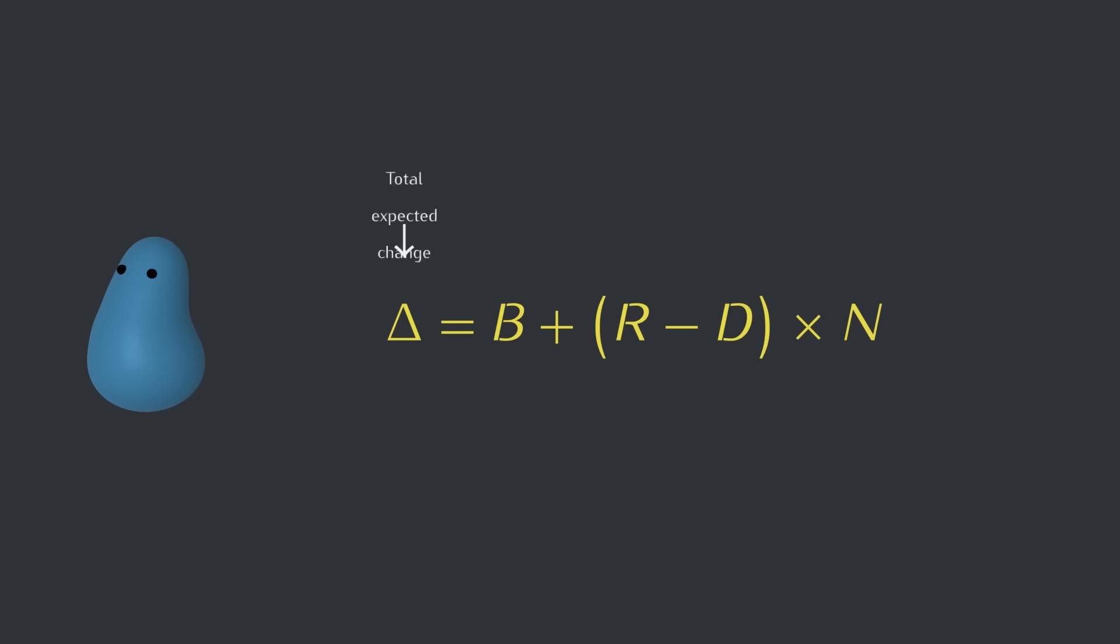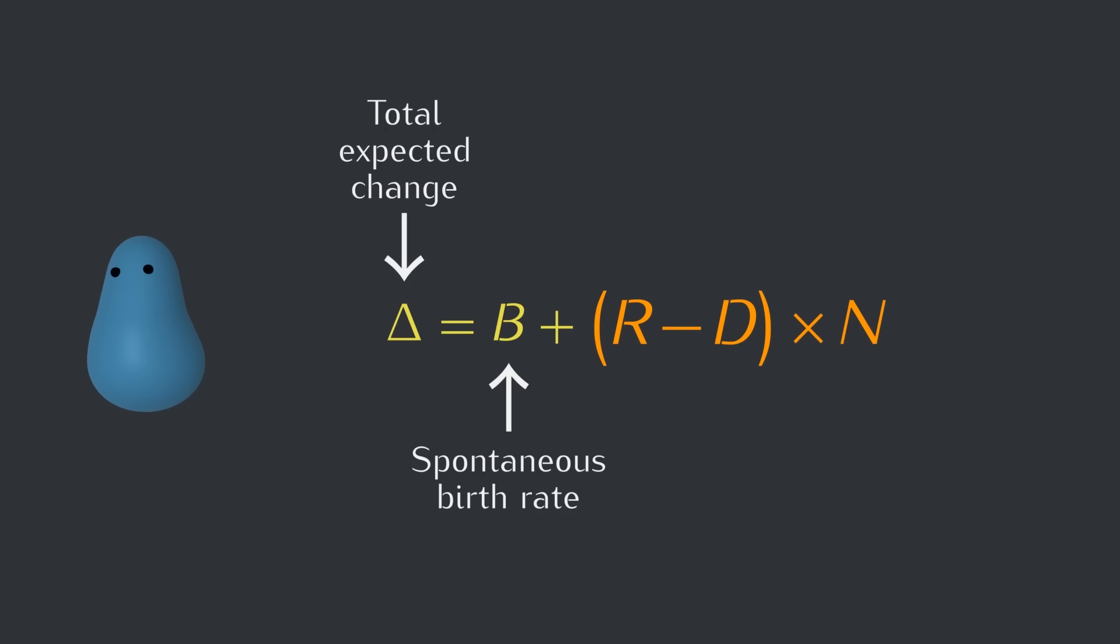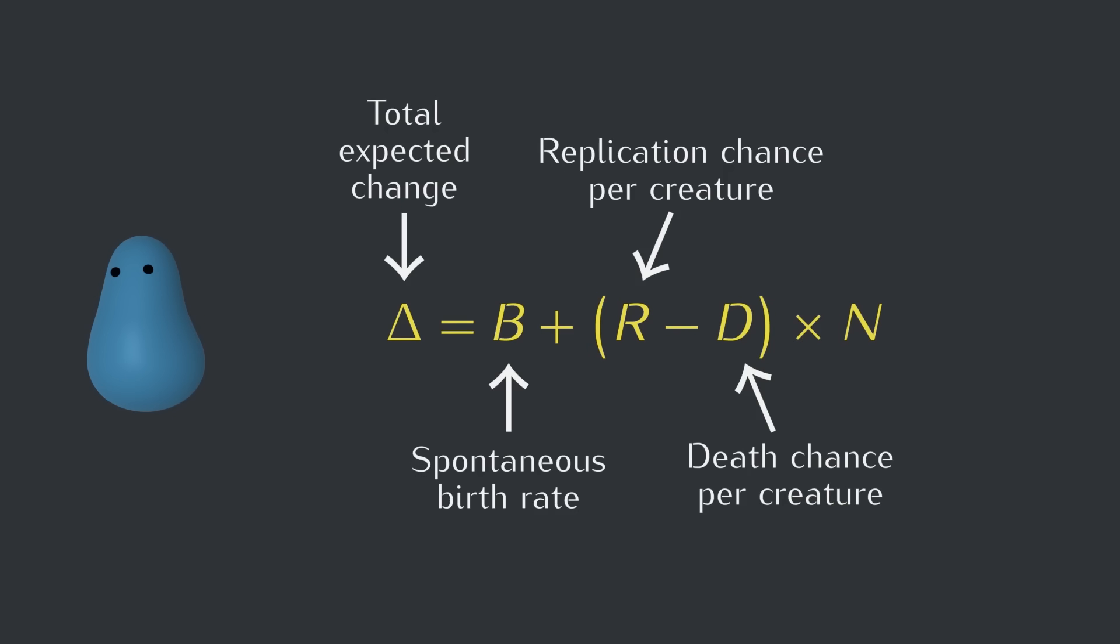Just like in the last video, the total expected change will be equal to the non-replication birth rate plus a term that depends on the current number of creatures. In the last video, this was the replication chance per creature minus the death chance per creature times the total number of creatures. Mutation affects what happens when a creature replicates, so to add mutations into this model, we should do something to this replication piece. But what exactly?